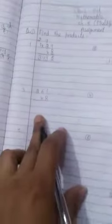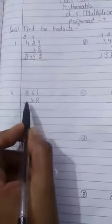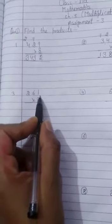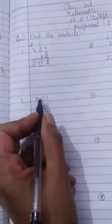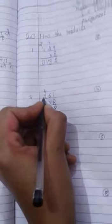Now question number 3. 261 multiplied by 8. So start. 8 times 1 is 8. 8 times 6 is 48. We will write 8 here and 4 here. 8 times 2 is 16, 16 plus 4 is 20. Now answer is 2088.